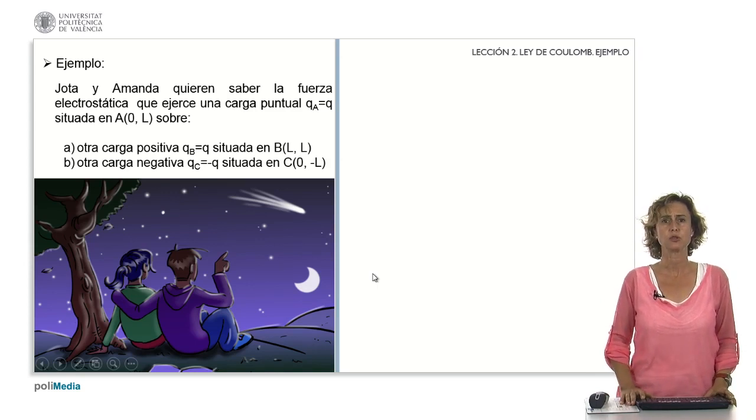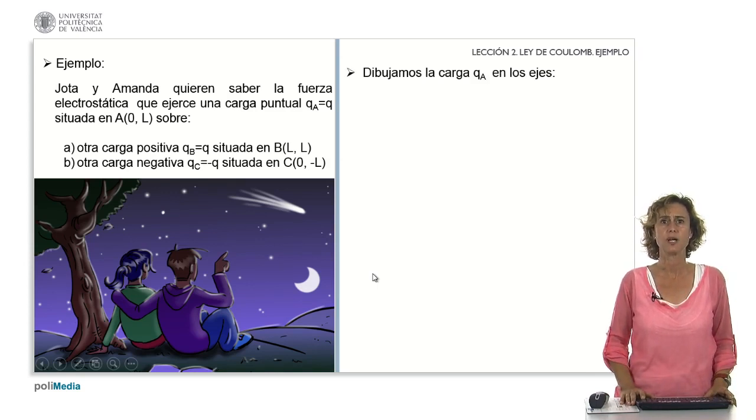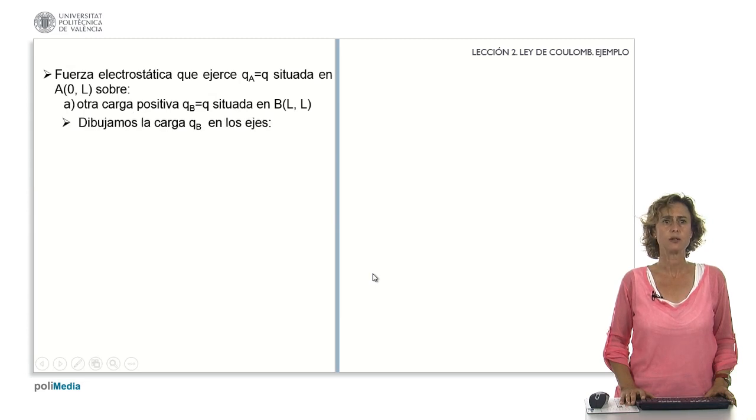What is the first thing we have to do? The first thing we do is draw the charge Q sub A on the axis. Point A is 0,L. We draw the charge at that point. What do we have to do next? Draw the charge Q sub B at the point where it is.